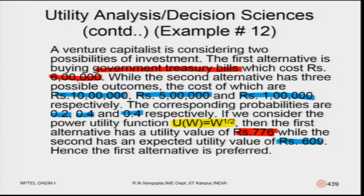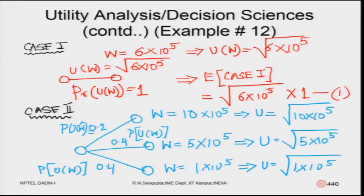The expected utility for Case 2, when calculated by multiplying each utility by its corresponding probability and summing, comes out to approximately 609. Comparing the two: Case 1 gives 776 and Case 2 gives 609. Since 776 > 609, the government treasury bill investment is preferred. The probability and utility may be dependent, and the utility u(w) = w^(1/2) may change depending on the problem formulation.